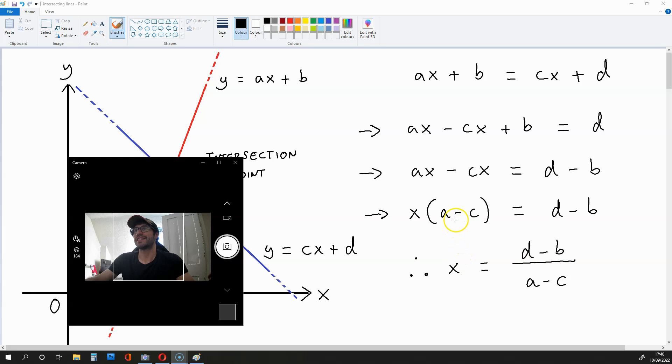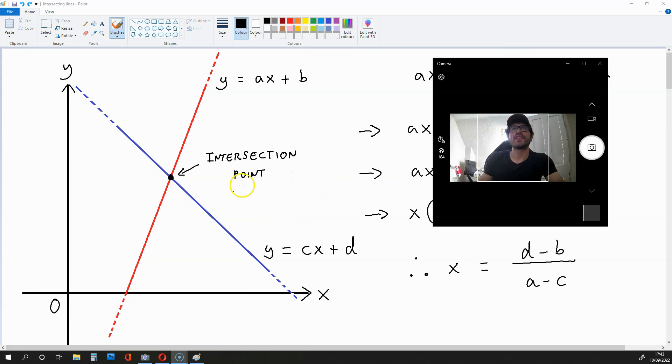This is because we divide both sides of this equation by A minus C. So we found the X coordinate for the intersection point, and it turns out to be D minus B over A minus C.